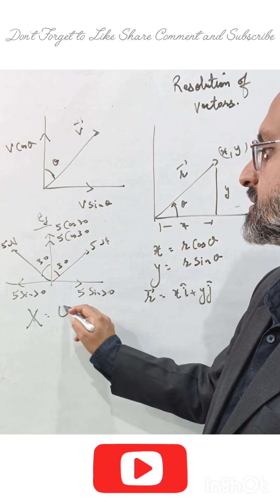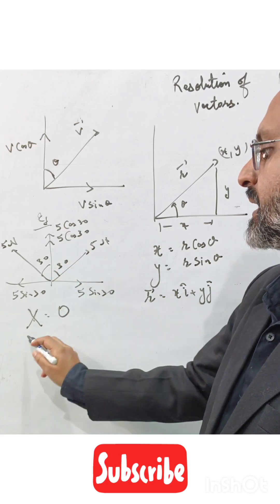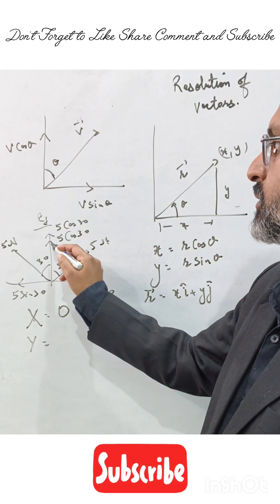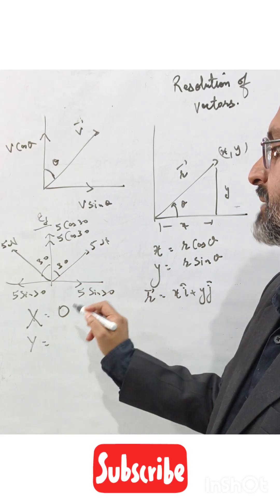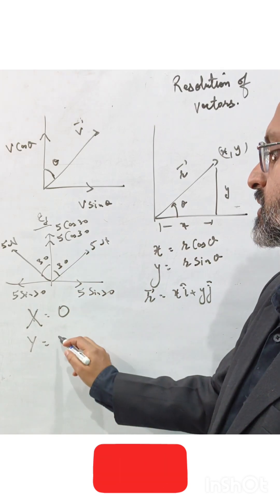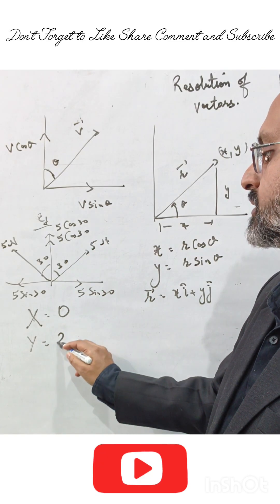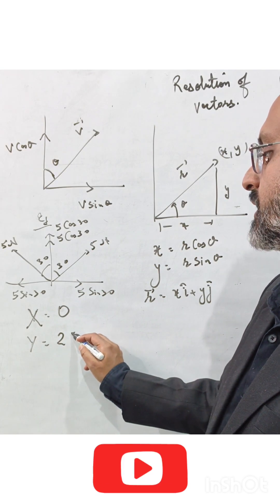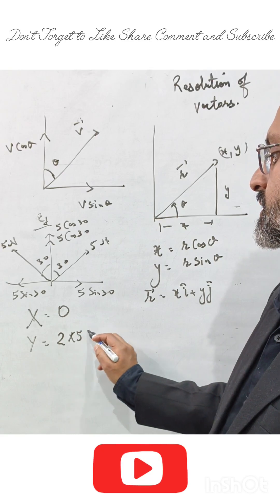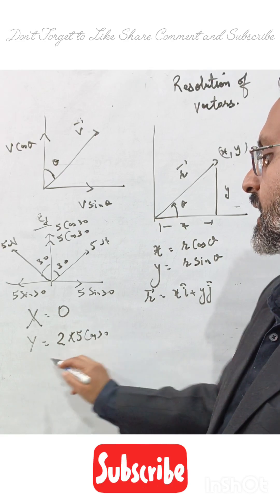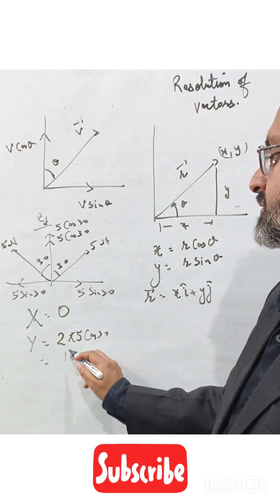Our x-axis component will be zero. So all of the component is directed along the y-axis, and both are in the same direction. When we have the same direction, they are added directly. So we have five cos 30 plus five cos 30, which equals 2 into 5 cos 30, or 10 cos 30.